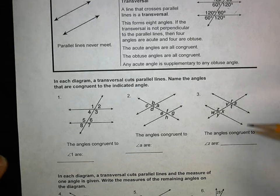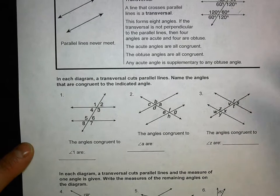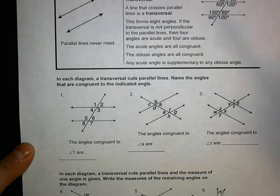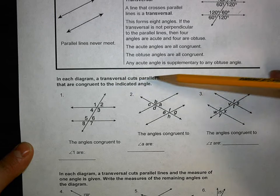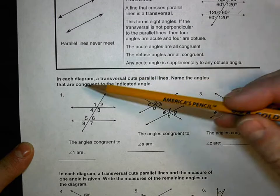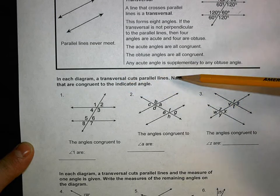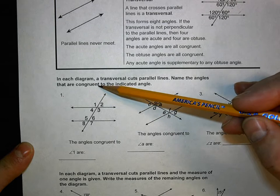Today is actually a pretty decently easy homework. As long as you do it, it doesn't get very hard. So it says, in each diagram, a transversal cuts parallel lines. Name the angles that are congruent to the indicated angle. Congruent means the same.